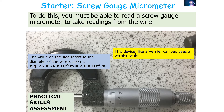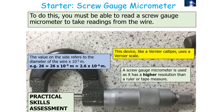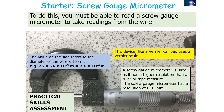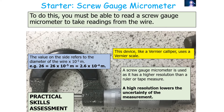A reading of 26 on the scale gives 26 times 10 to the minus 5 metres, which is 2.6 times 10 to the minus 4 metres in standard form. A screw gauge micrometer is used rather than a ruler or tape measure to measure the diameter of a wire because it has a higher resolution — 0.01 millimetres — which is much higher than a ruler. A higher resolution lowers uncertainty, giving a more accurate value.